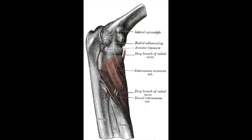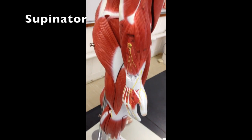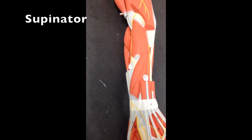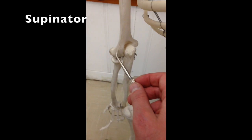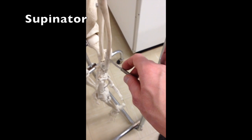Next we'll talk about some muscles called rotators because they rotate the forearm. The first one is the supinator. It has origins on the lateral epicondyle of the humerus and the crest of the ulna, and it inserts on the anterior and lateral surface of the radius. It assists the biceps brachii in rotating the forearm laterally, as in opening a door. It supinates the forearm and the hand. The supinator is shown here on our torso model and here on our arm model.